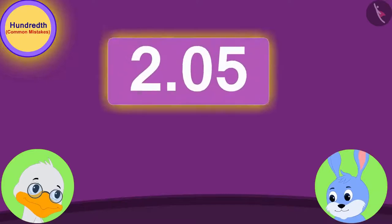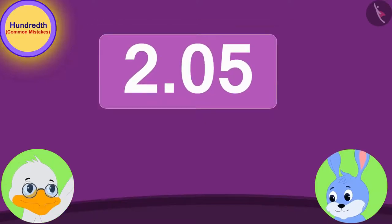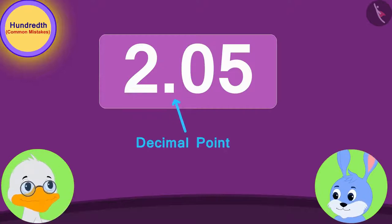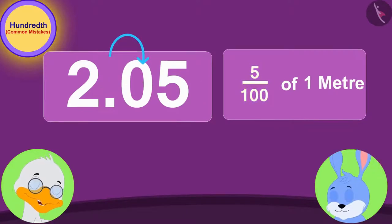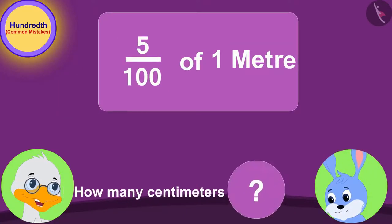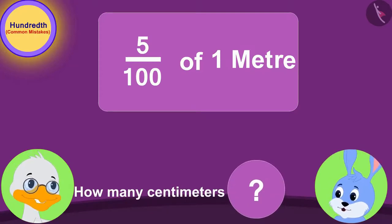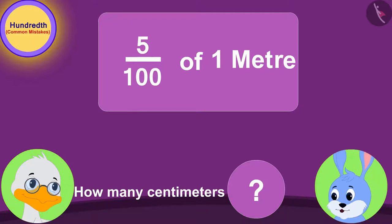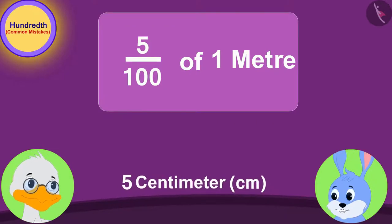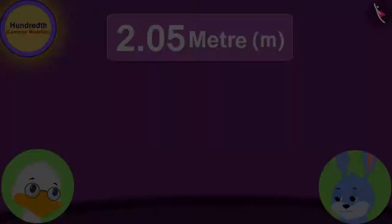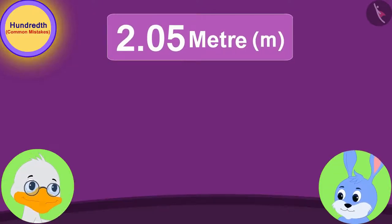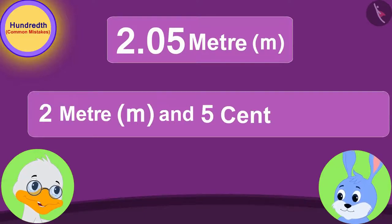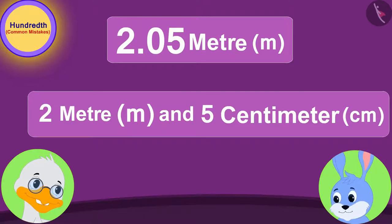Uncle said, "Look Bunny dear, in 2.05 meters, the decimal point is followed by 0.5, or the 5-hundredths part of a meter. And how many centimeters of a meter is equal to 5 hundredths?" Bunny quickly replied, "5 centimeters!" Uncle said, "Exactly! In this way, 2.05 is equal to 2 meters and 5 centimeters."